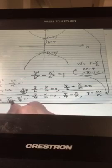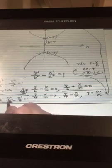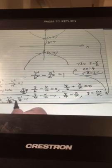So y squared over 16 minus x squared over 4 equal to 1. Any question?